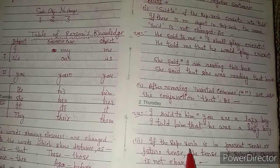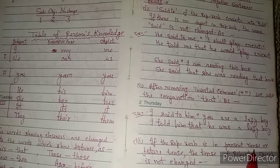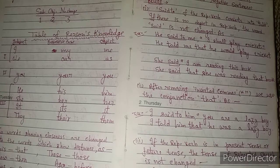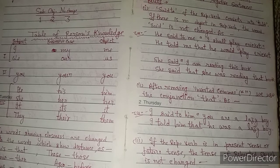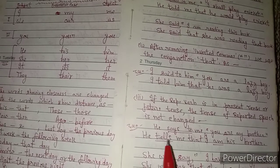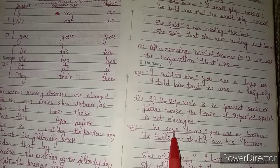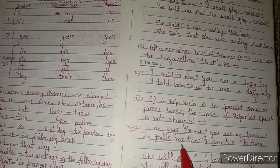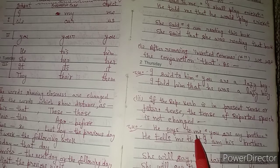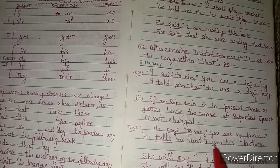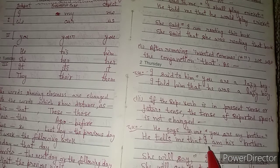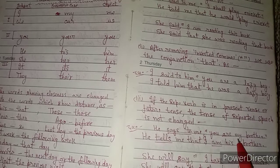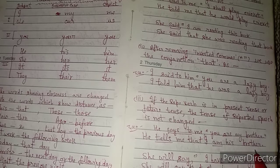Rule number three: if the reporting verb is in present tense or future tense, then the tense of the reported speech is not changed. For example: 'He says to me — I am visiting my brother.' Since 'says' is present indefinite, the tense is not changed. 'He' stays 'he', 'says to' becomes 'tells', 'me' stays 'me', conjunction 'that' is added. 'I' — first person — subject is 'he', so becomes 'he'. 'Am' stays 'am' because reporting verb is in present tense. 'My' — first person possessive — subject is 'he', so 'my' becomes 'his'. 'Brother' stays 'brother'.